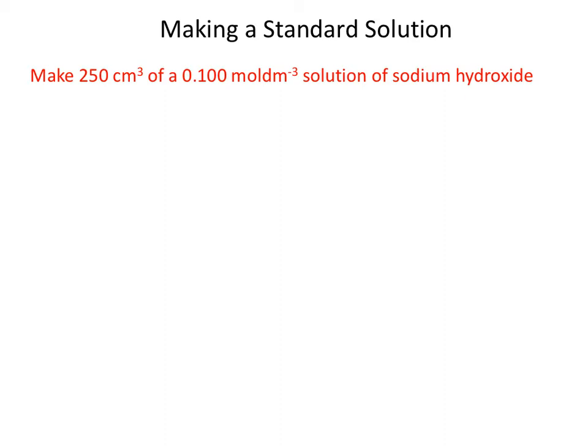First of all we need to know the moles of sodium hydroxide that are going to be required in a 250 centimetre cubed solution. So if moles is concentration times volume, our concentration is 0.1, our volume is 250 but we've got to convert that into decimetre cubed and if I type that into my calculator I get 0.025.